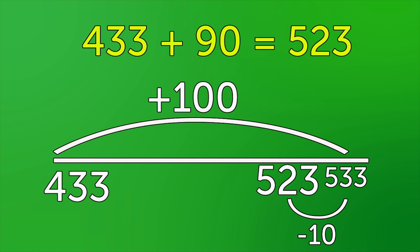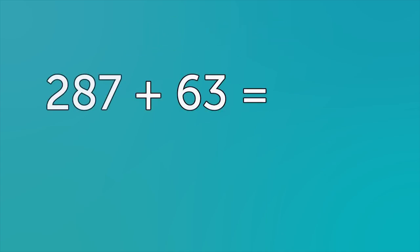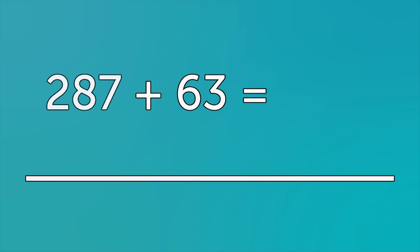Bridging: two hundred and eighty-seven plus sixty-three. For this method, look at the larger number and see if there is a useful number you could add to first. These are usually multiples of ten or a hundred. The next multiple of a hundred is three hundred, so add to that number first.